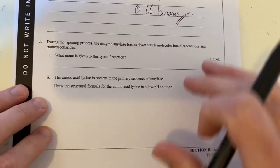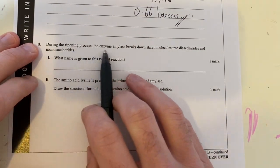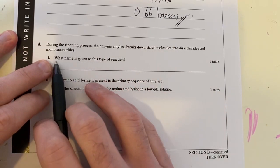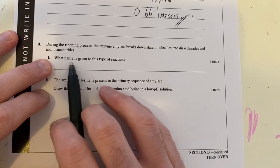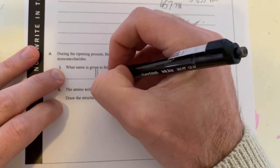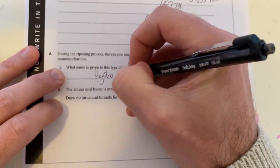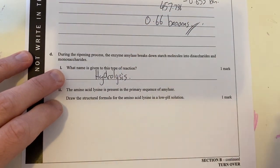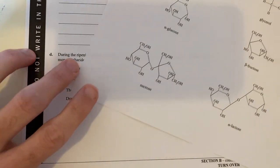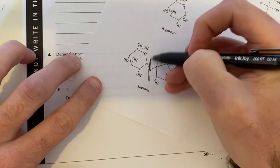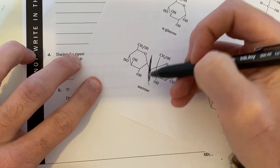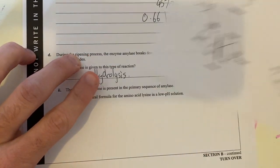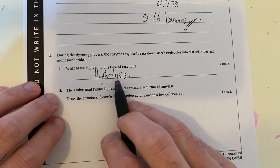Part D: during the ripening process, the enzyme amylase breaks down starch molecules into disaccharides. What name is given to this type of reaction? It's hydrolysis, where we are breaking up, basically breaking this ether linkage. So it's a hydrolysis reaction. We add in water to break that up into our two things. That's a hydrolysis reaction.